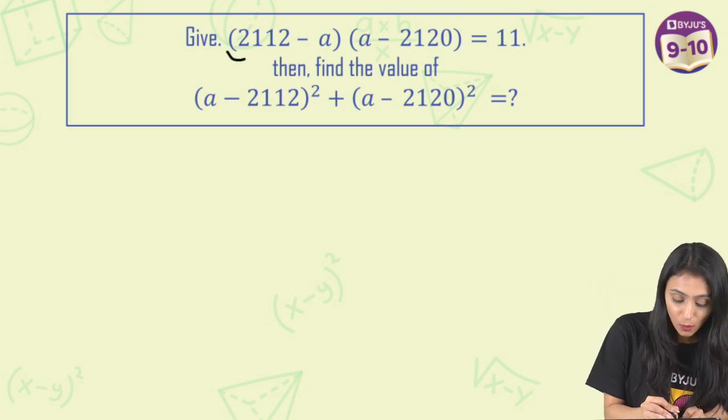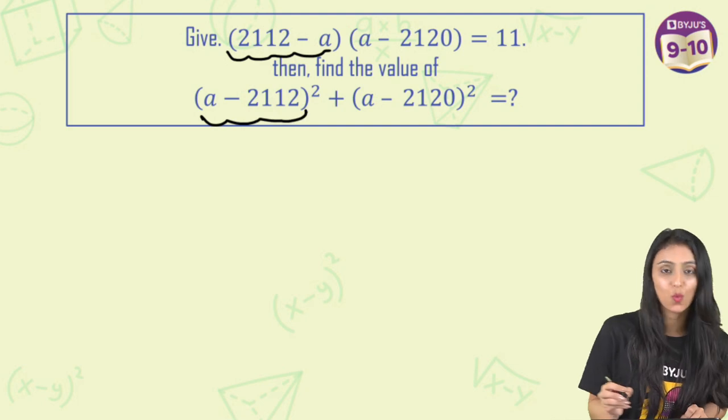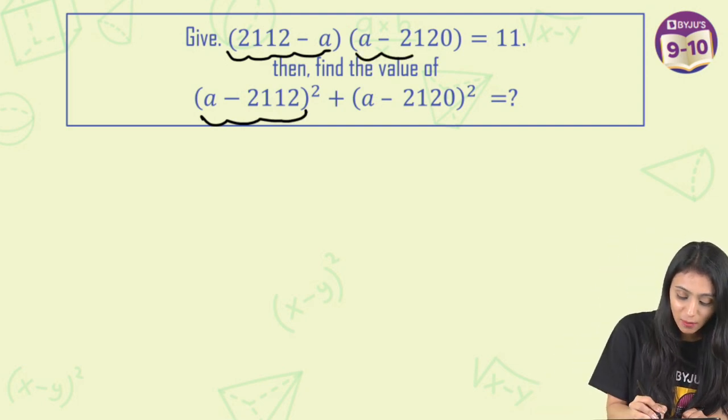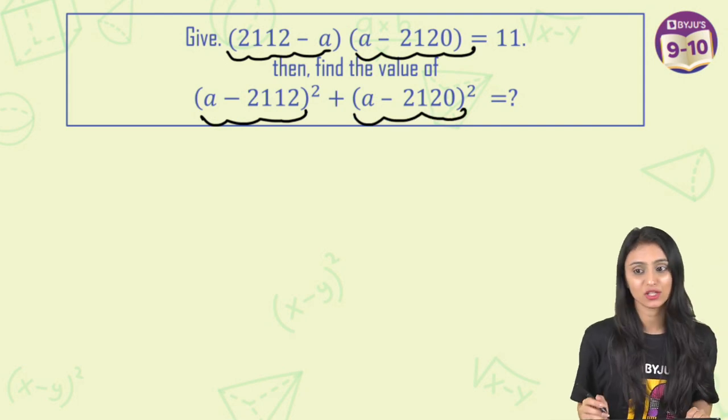So 2112-a, right? And here it's a-2112, just opposite of this, only signs are reversed. And here it's a-2120, this is also a-2120.